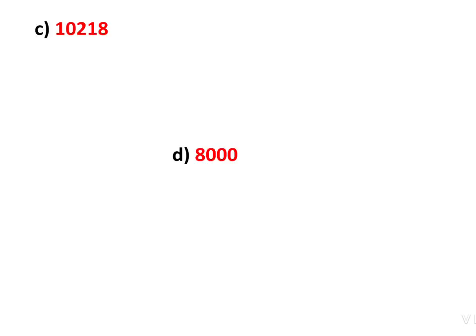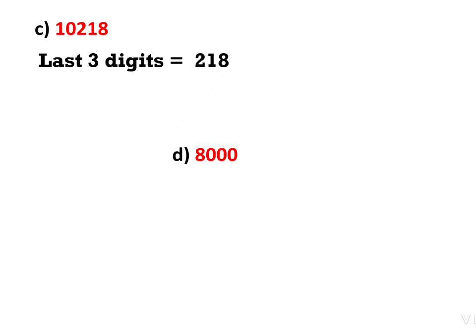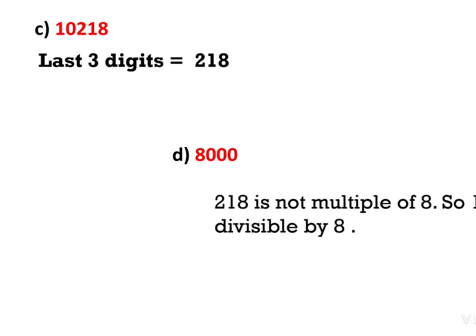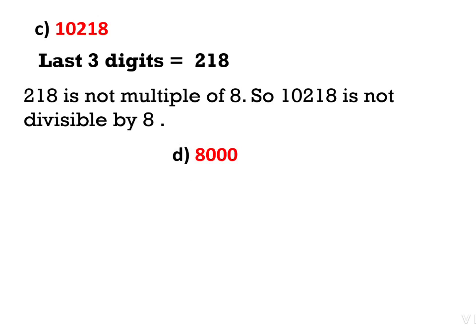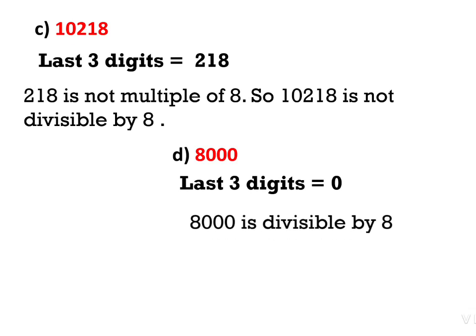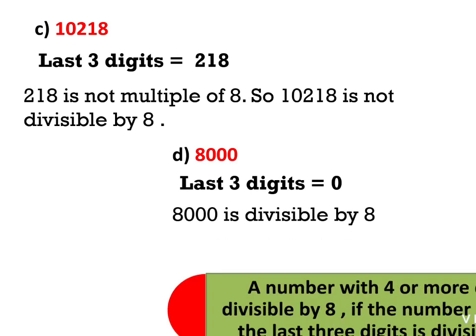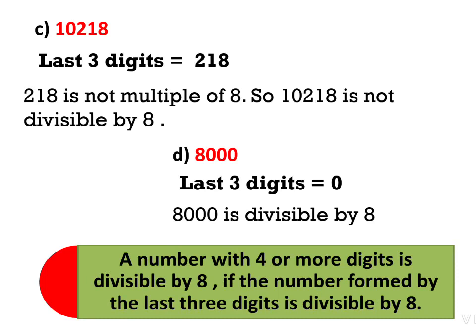We check whether the last three digits are multiples of 8. For 10,218: the last three digits are 218. When we divide 218 by 8, there will be a remainder, so 218 is not a multiple of 8. Therefore, 10,218 is not divisible by 8. For 8,000: the last three digits are 000, and 0 is a multiple of 8. Therefore, 8,000 is divisible by 8. A number with 4 or more digits is divisible by 8 if the number formed by its last three digits is divisible by 8.